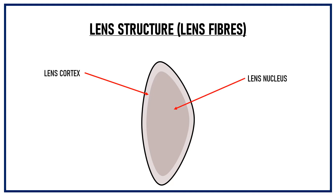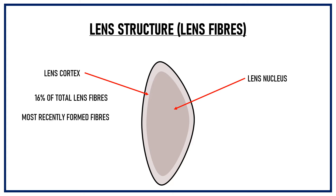These lens fibers can be divided into lens cortex and lens nucleus. The layer of lens fibers that is directly under the capsule is known as the lens cortex. Cortex comprises about 16% of the total lens fibers and it is made up of the youngest, most recently formed fibers, because during lens growth fibers are laid down from the inside to the outside. Since cortex lies on the outside, it contains newly formed fibers. Under the cortex lies the lens nucleus.